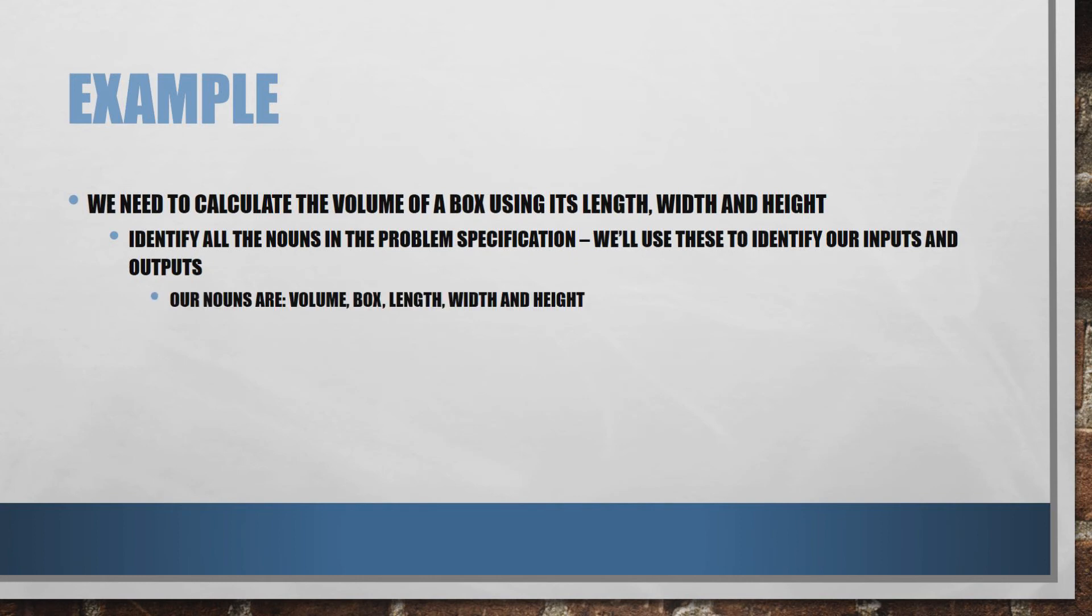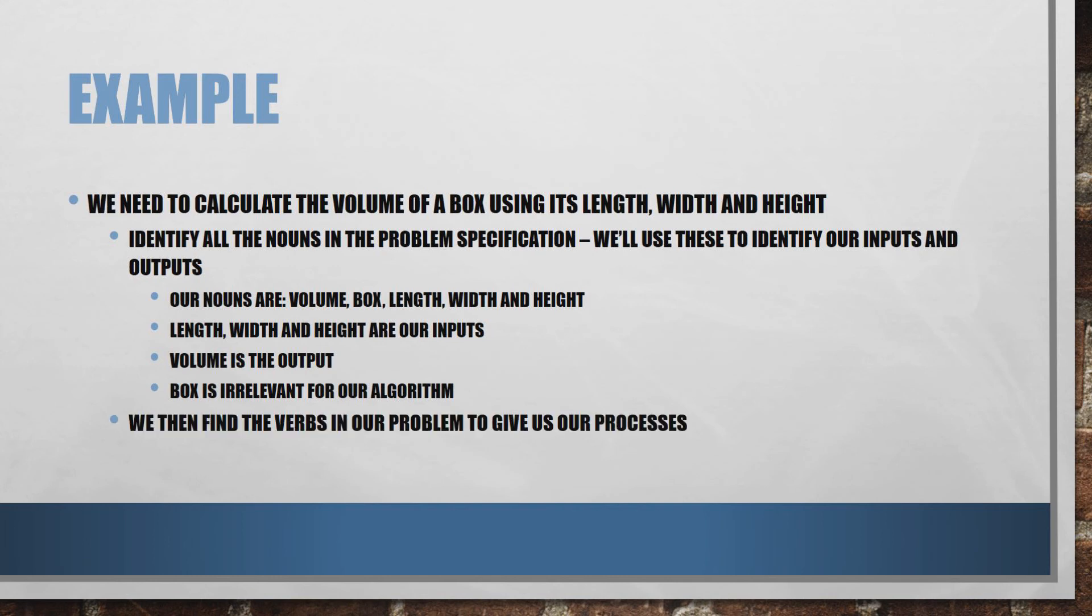So in this example, our nouns are volume, box, length, width and height. And from that, we know that length, width and height are our inputs and volume is going to be our output. We don't need to worry about box. I know it's a noun. It's not really relevant to what we're looking to do. It's not relevant for our algorithm. So that can be ignored.